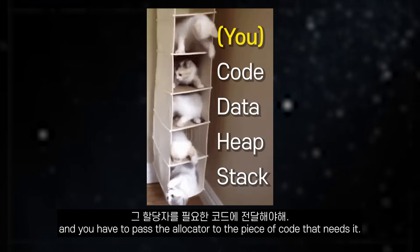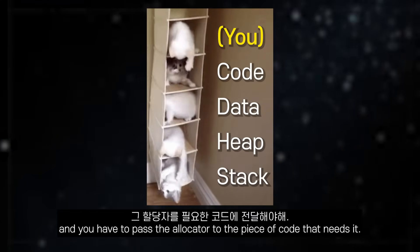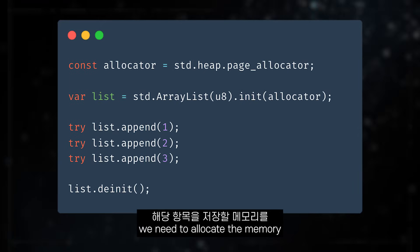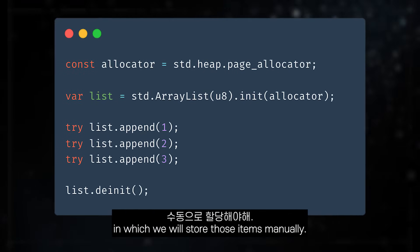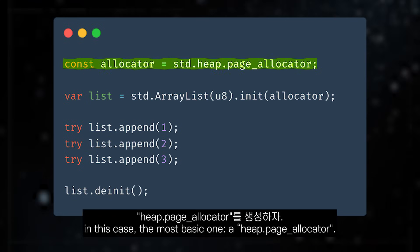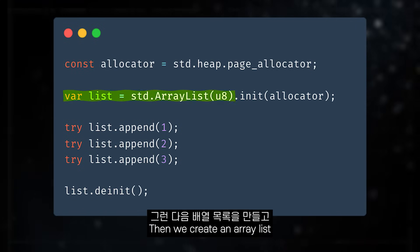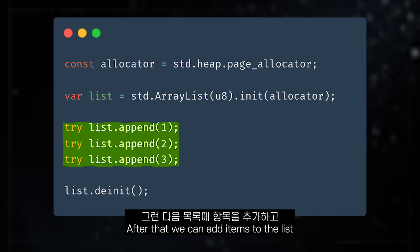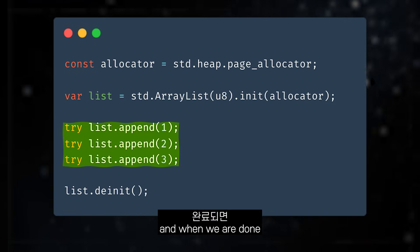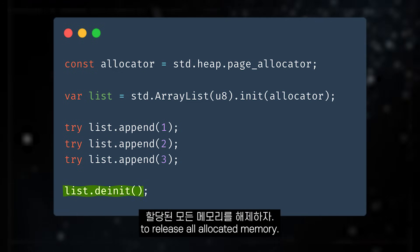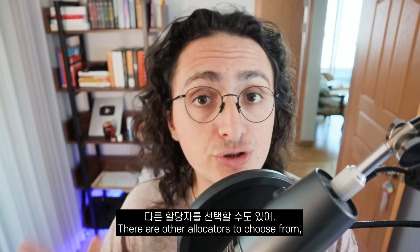You have to pass the allocator to the piece of code that needs it. If we want to create a growable list of items, we need to allocate the memory in which we will store those items manually. For this, we first create an allocator — in this case the most basic one, a heap page allocator. Then we create an array list and give it the allocator. After that, we can add items to the list. And when we are done, we call the deinit method to release all the allocated memory.